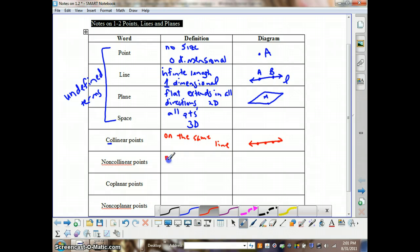So if collinear points are on the same line, non-collinear points are not on the same line. So if you know one definition, you know the other. You get two for the price of one. So non-collinear points are points that are not on the same line. And these three points, obviously, are not on the same line.